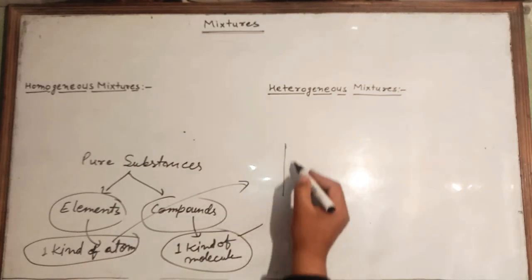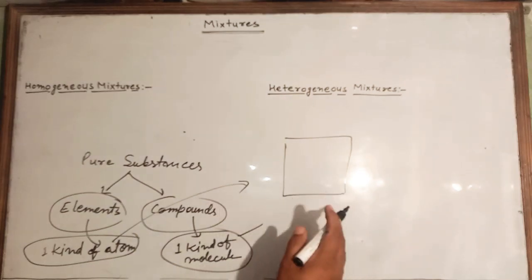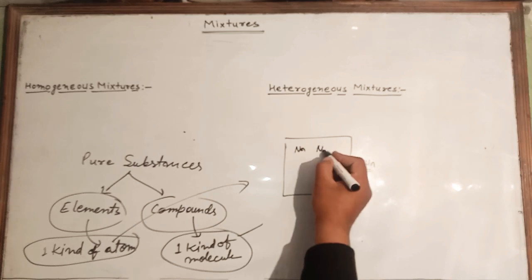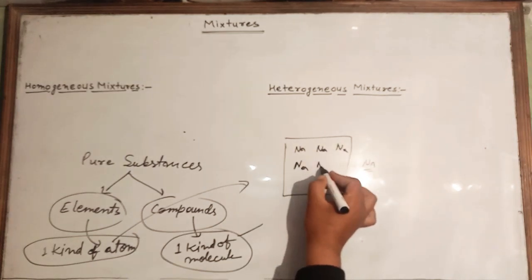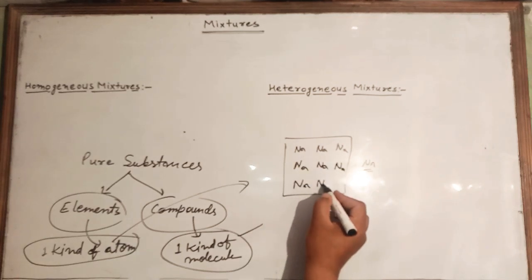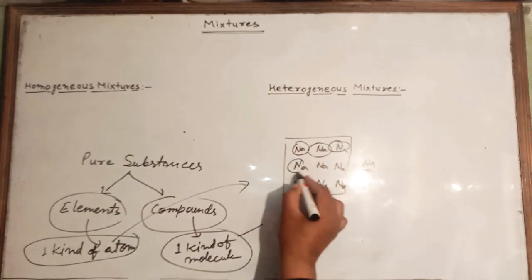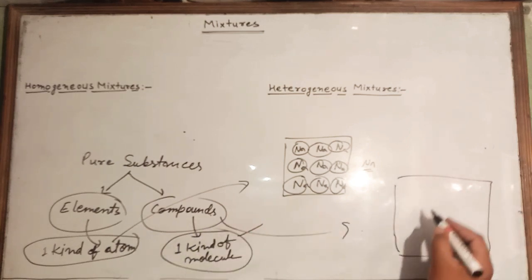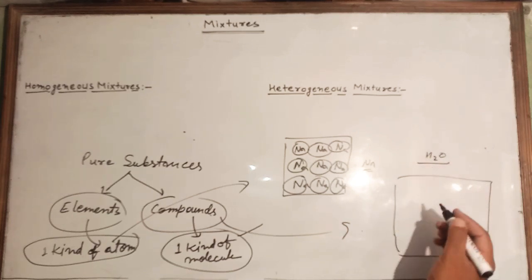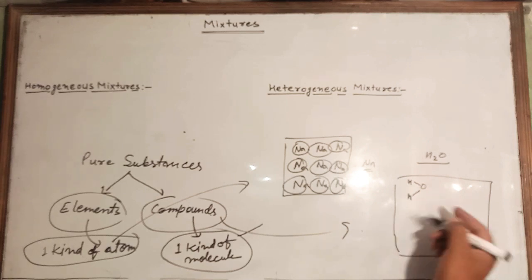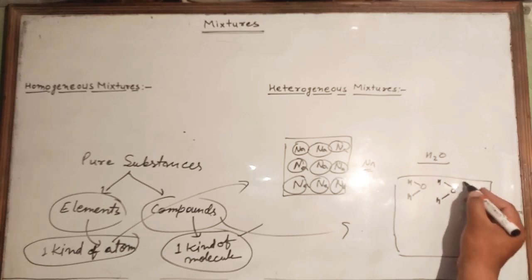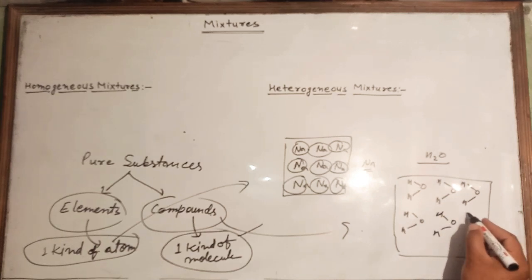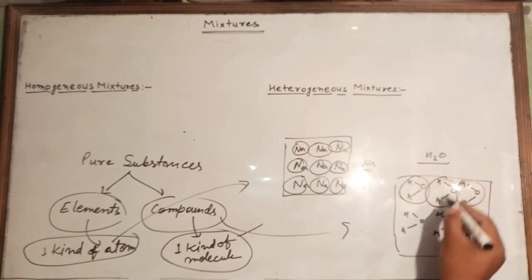For example, take sodium as an element — its atoms all look the same, just one kind of atom throughout. We can represent sodium atoms like this. In the case of a compound like H₂O (water), there is only one kind of molecule. We can represent one molecule of water, then another, and another — the same type of molecule throughout its volume.